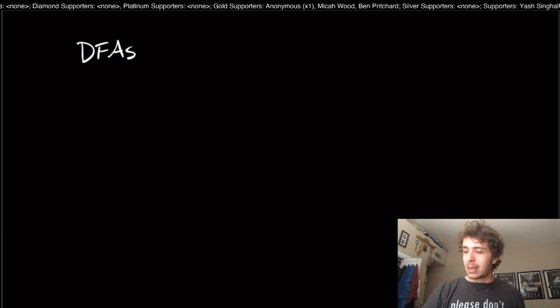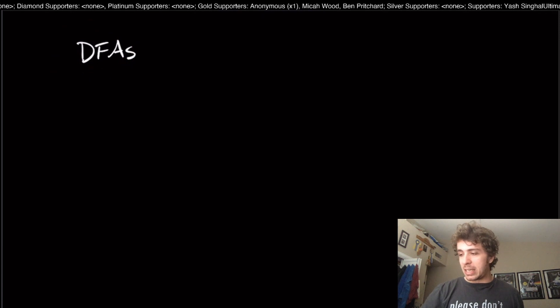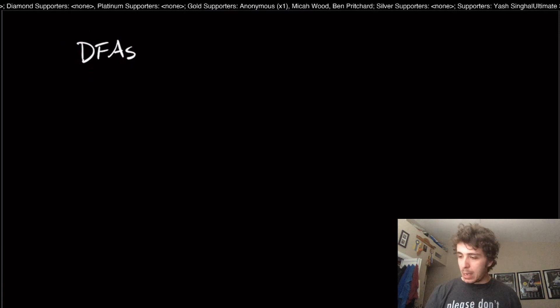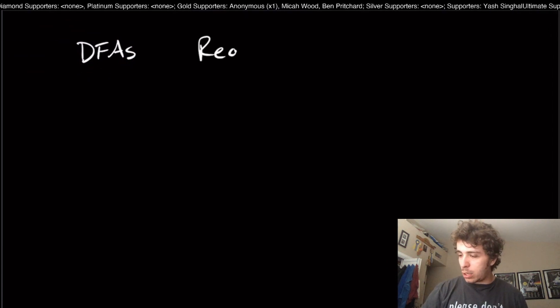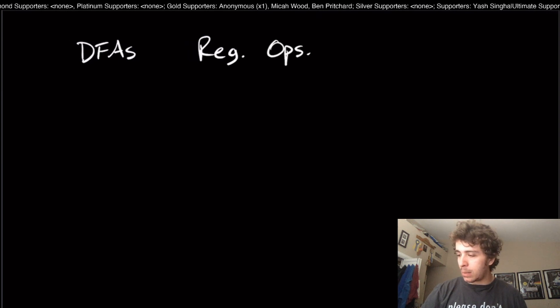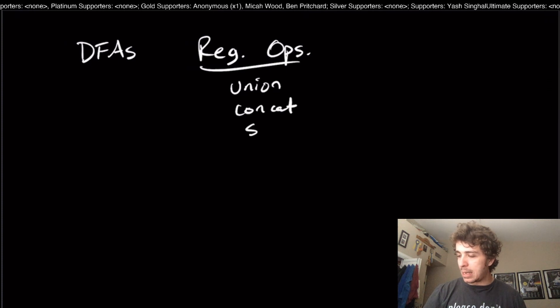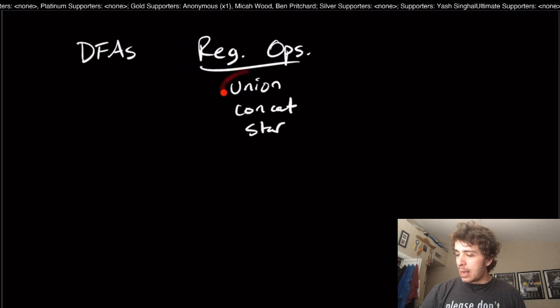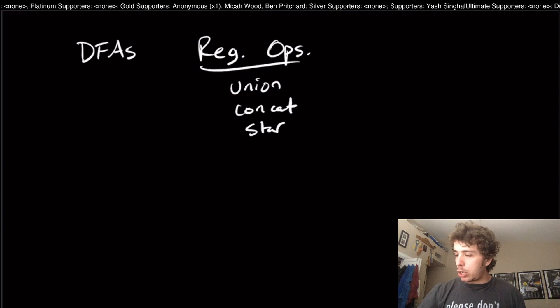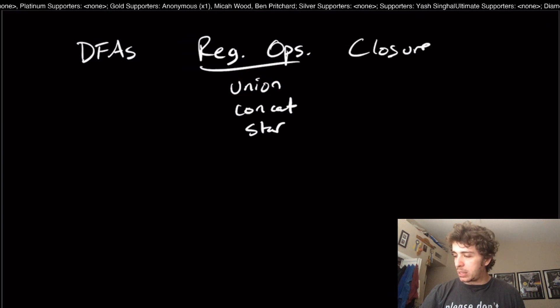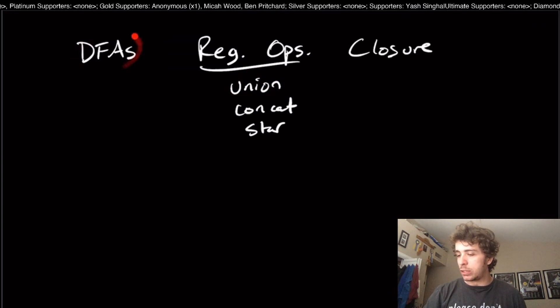We're going to be talking about DFAs today, just as we have been doing before. We talked about these things called the regular operations: union, concatenation, and star.